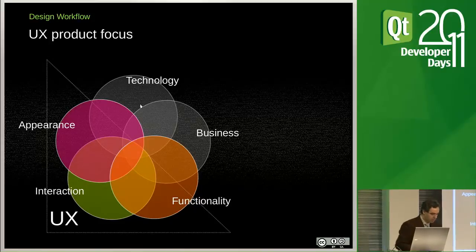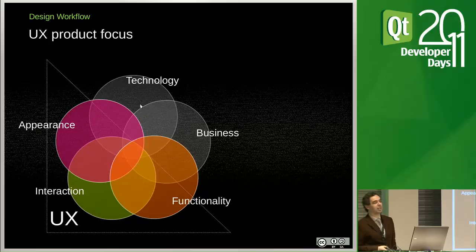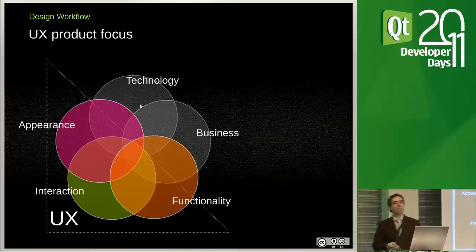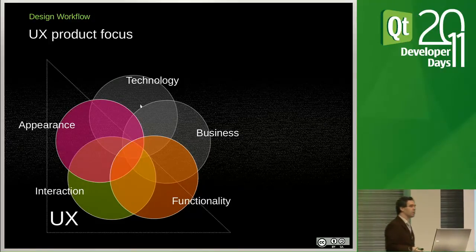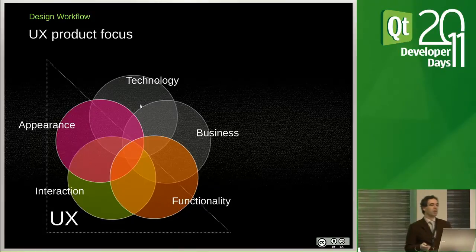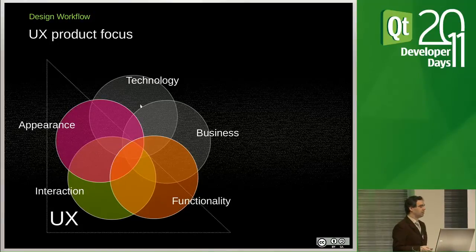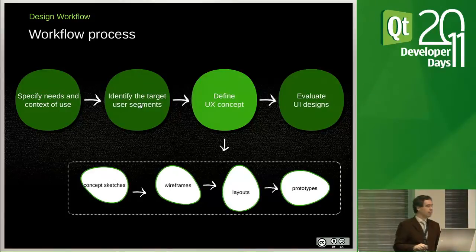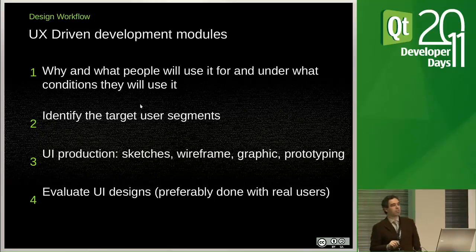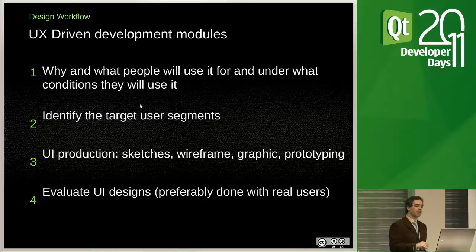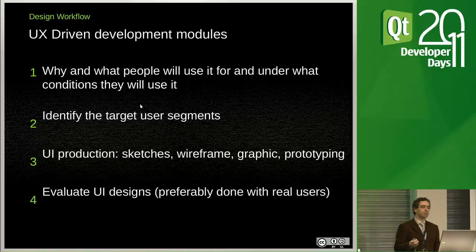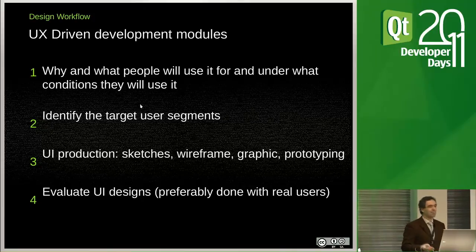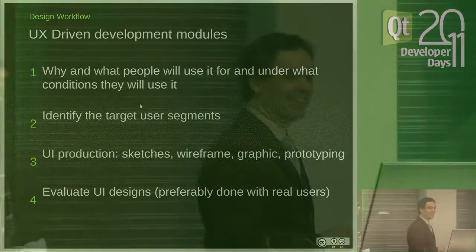Nokia identifies five key areas for creating successful consumer-based products: technology, business, appearance, interaction, and functionality. Three of those areas are mostly UX — the stuff that designers deal with — and they are a fundamental part of the product. In the traditional model, we have interaction designers who find out the whys and identify user targets. Then we move into the real work. I intervene more in the third area — the UI production: creating sketches, wireframes, graphics, mock-ups, and prototypes. Finally, we evaluate the user interface.